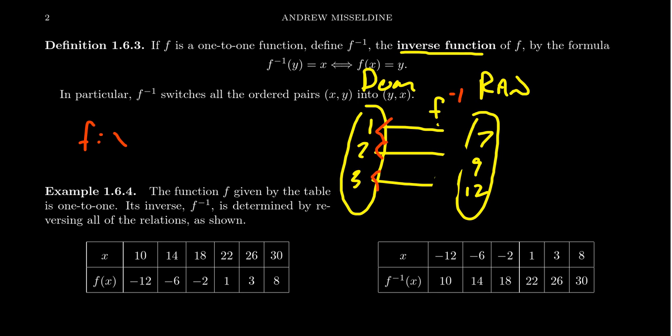And so whenever f sends x to y, f inverse will do the opposite. f inverse will send y back to x. It reverses the order. So if you have an ordered pair (x, y) on the graph, it'll reverse that order as (y, x).